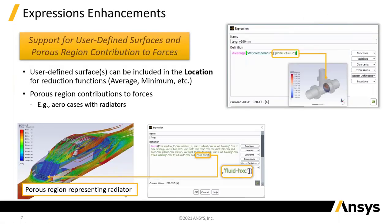There are a couple of new supports for functions. A key one is that now whenever you use an expression, previously you could only take, say, the average static temperature on a surface. Now any object you've created — be it a plane, an isosurface, an isoclip, whatever — can be used for this information. So it's much easier now to go around and extract data.